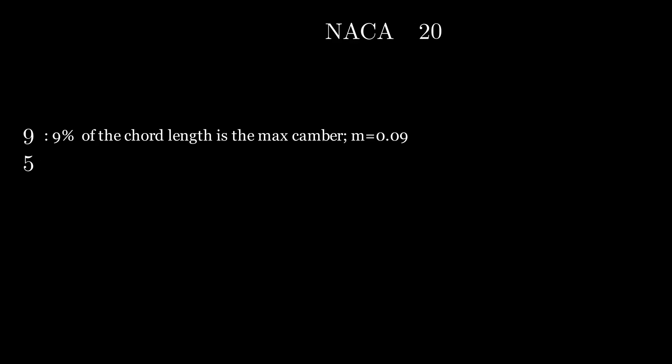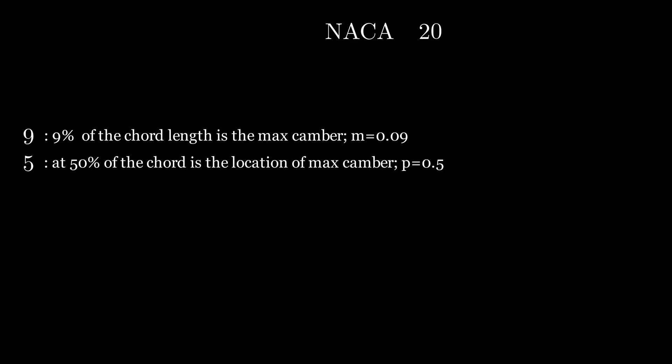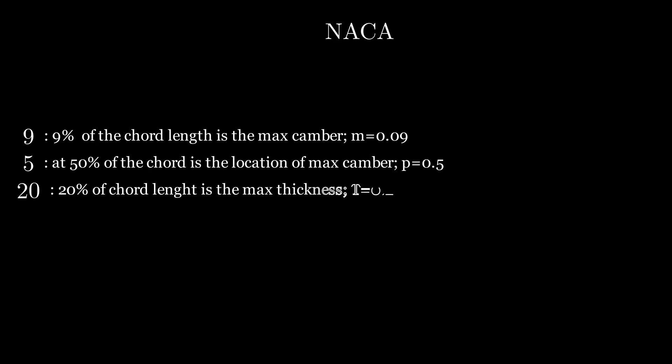The next digit tells us the distance from the leading edge in tenths where the max thickness will be. So a NACA 9520 will have its max thickness at 50% of the chord. Now that we know where it is thickest, we need to know how thick it will be there. The last two digits tell us that. Again it is given as a percentage, so NACA 9520 will have 20% of the chord thickness at the max thickness location.